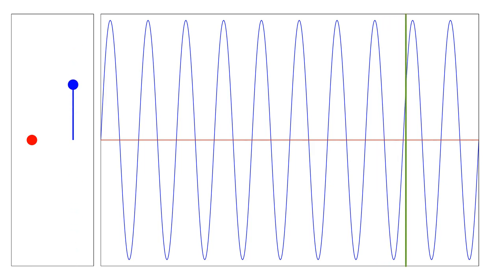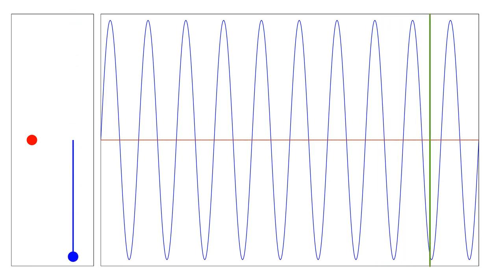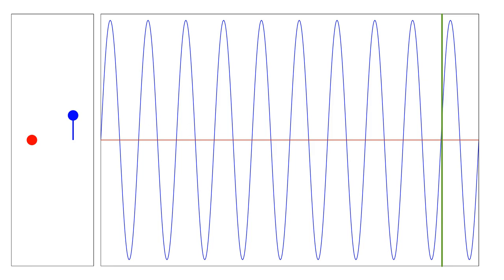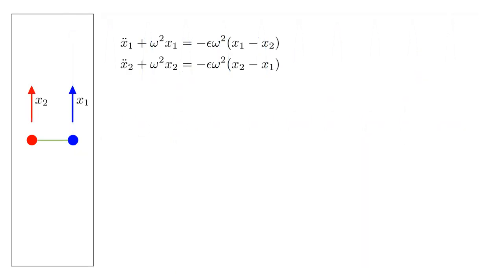Our hope is that the readily obtainable solution to this simpler problem can be used as the starting point to develop a solution to the more difficult, perturbed problem. Now let's add a perturbation: a spring between the masses with spring constant epsilon times omega squared, to create an interaction force proportional to the difference of the mass positions.